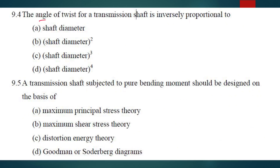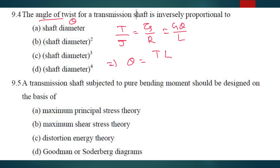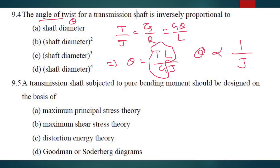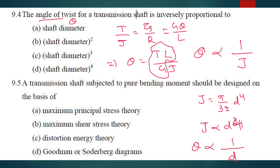Angle of twist — theta. For a transmission shaft, angle of twist is inversely proportional to what? We know the formula: T/J = τs/R = Gθ/L. So θ = T×L / (G×J). Other parameters remaining same, θ is proportional to 1/J. And J is the polar moment of inertia: J = π/32 × D⁴ for a circular shaft. So J is proportional to D⁴, and therefore θ is inversely proportional to D⁴. D is your answer.